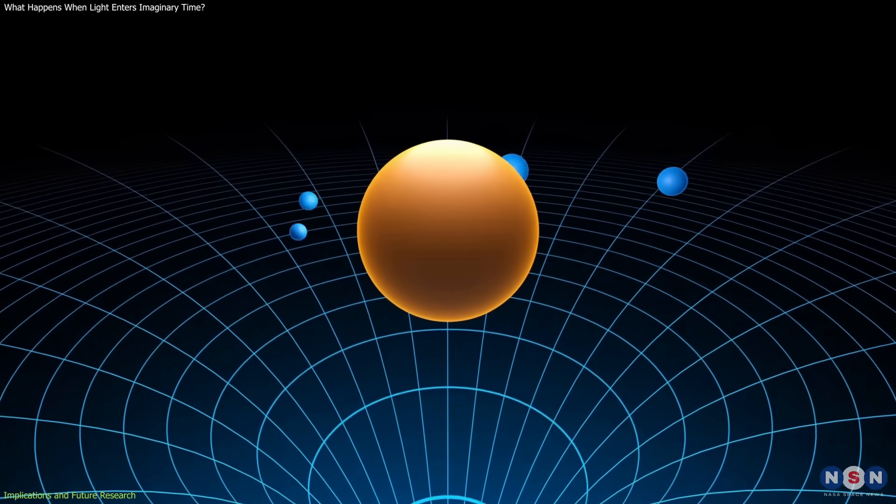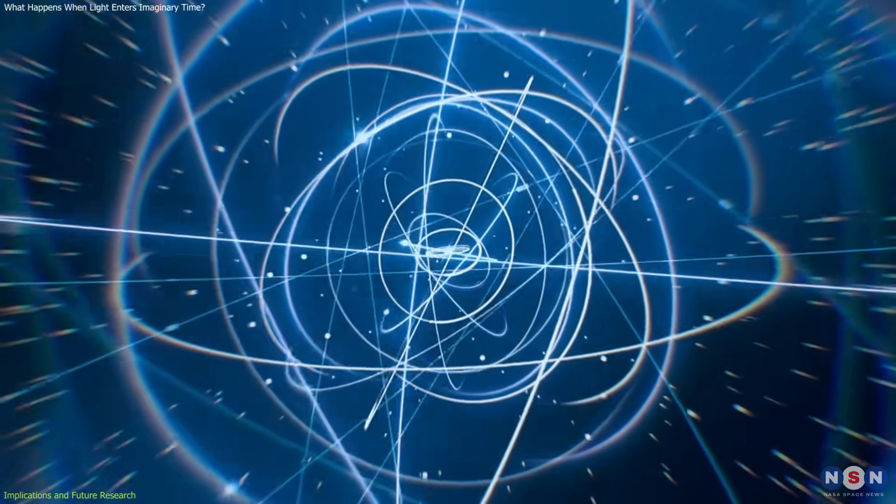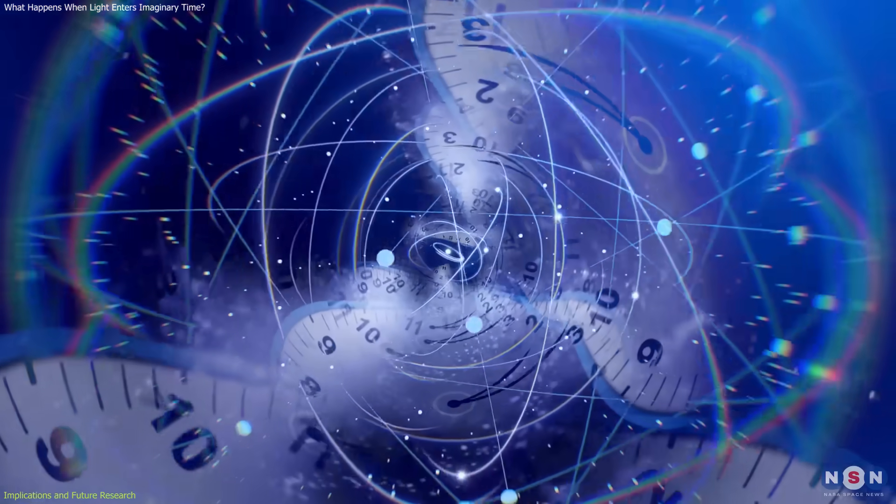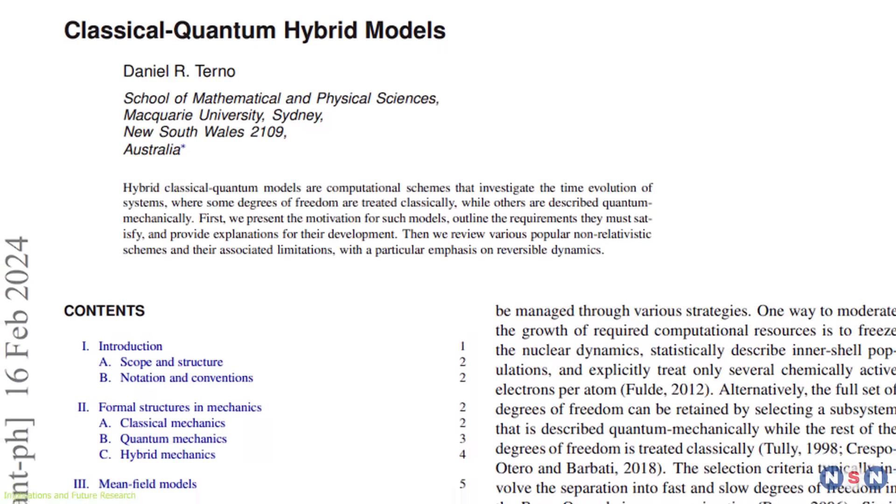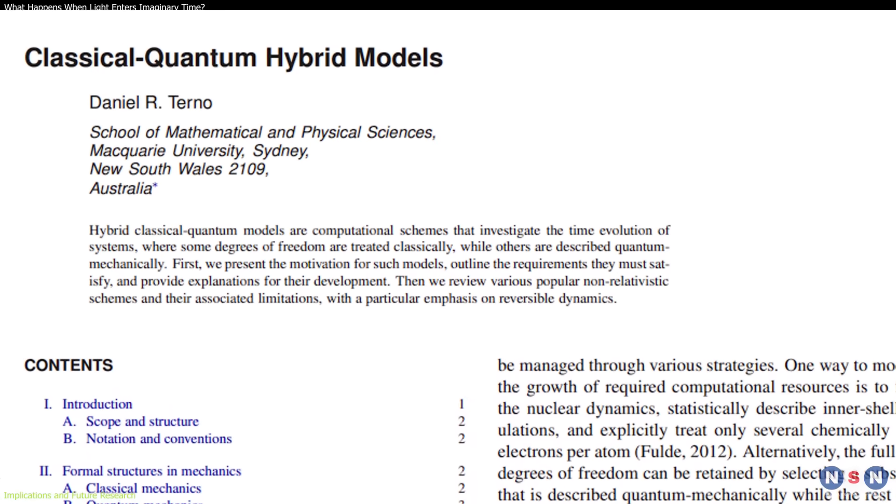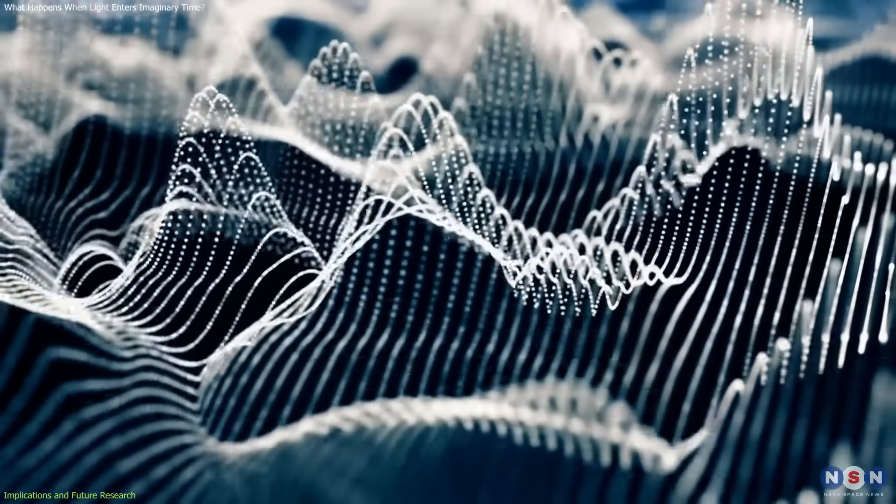Third, the results strengthen the idea that classical and quantum systems are more deeply connected than previously assumed. The same complex time behavior appears in both domains. This opens the possibility of applying hybrid models across disciplines, using classical wave systems to validate or challenge predictions in quantum physics.